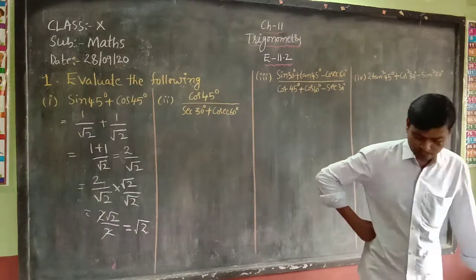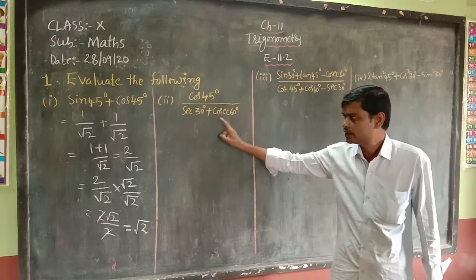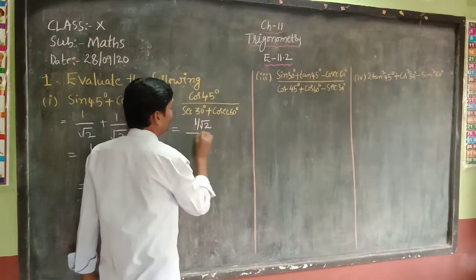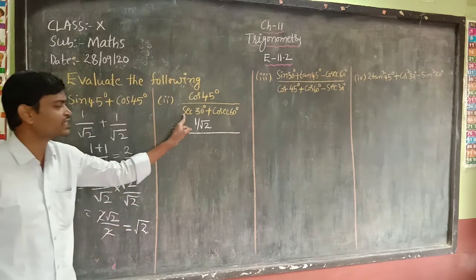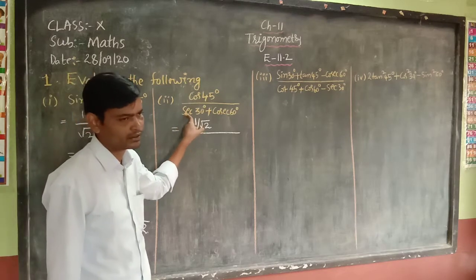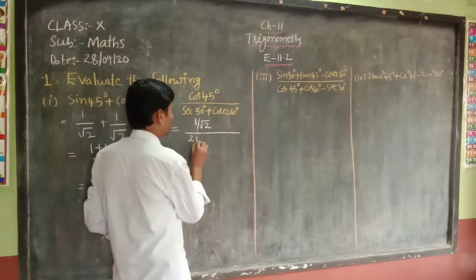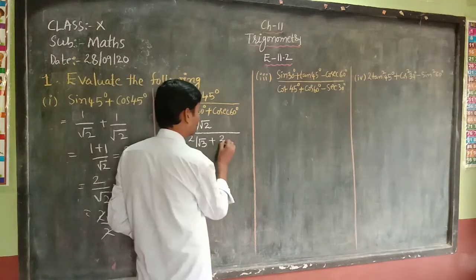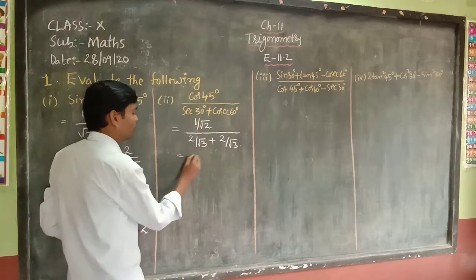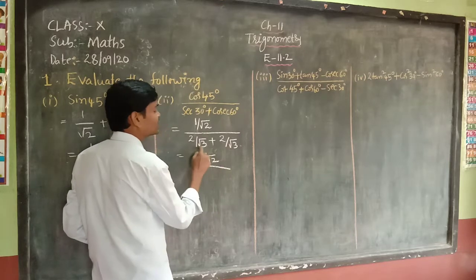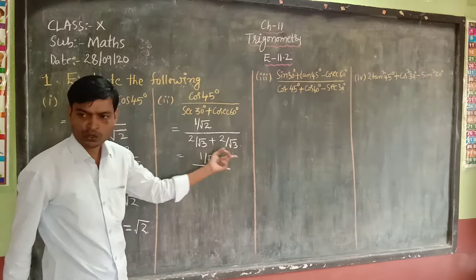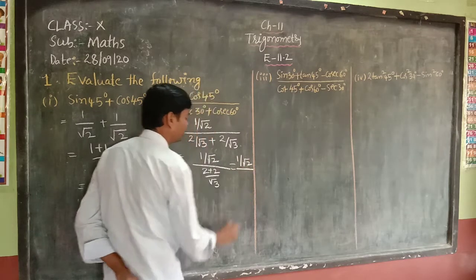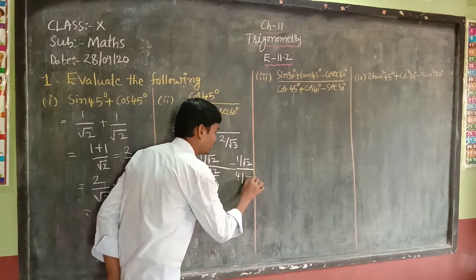The second question is: cos 45° divided by (sec 30° + cosec 60°). The value of cos 45° is 1/√2. Sec 30° is 2/√3 and cosec 60° is also 2/√3. So the denominator becomes 2/√3 + 2/√3 = 4/√3.